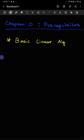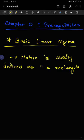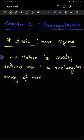Basic linear algebra. Let's start with matrices. So what are matrices? A matrix is usually defined as a rectangular array of numbers. Almost all of you have used the idea of matrices in one way or another, so in this section we'll review some basic ideas about matrices.